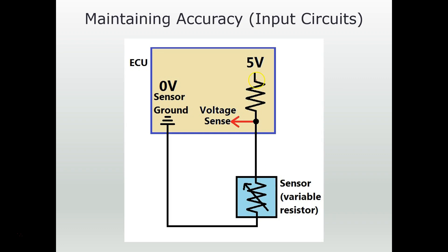Now let's take this one step further. This is the exact same circuit, but rather than having a chassis or engine ground, the sensor circuit comes back to the computer. That's done for accuracy — we often don't know the exact voltage on the ground, so bringing it back to the computer improves measurement accuracy. The computer can know exactly what the voltage is at this ground and exactly what the 5-volt reference is. Because it has these two reference points, it can accurately determine the resistance of the sensor.